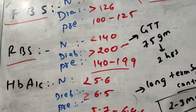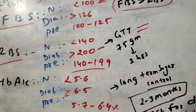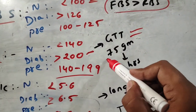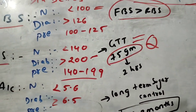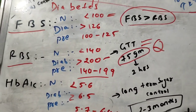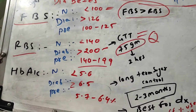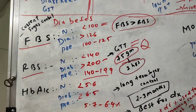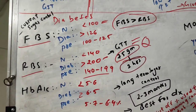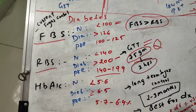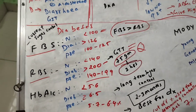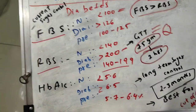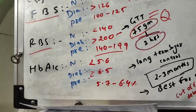For RBS confirmation, you perform the GTT (Glucose Tolerance Test). You give the patient 75 grams of glucose — this is a common exam question. After two hours, you perform the RBS. Nowadays, RBS is often done directly without the GTT.